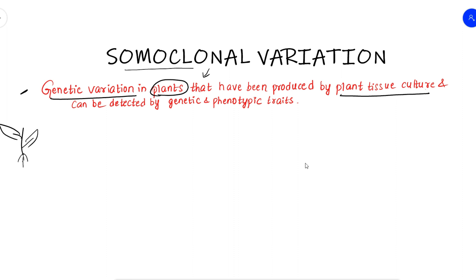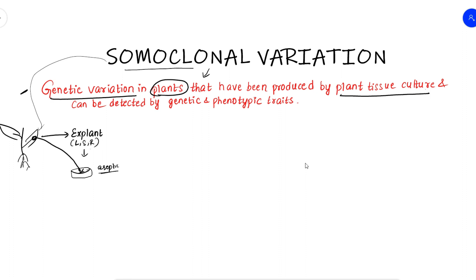Just a quick recap: this is a plant, and this is the explant — a somatic cell. From the explant, we can use a leaf, stem, or root. In the laboratory, we use an aseptic environment for tissue culture. This forms a callus, then organogenesis occurs, followed by hardening and transfer to the field. This is the general tissue culture process, but here we have somaclonal variation.